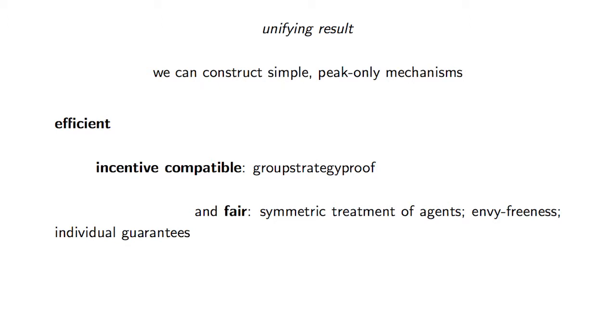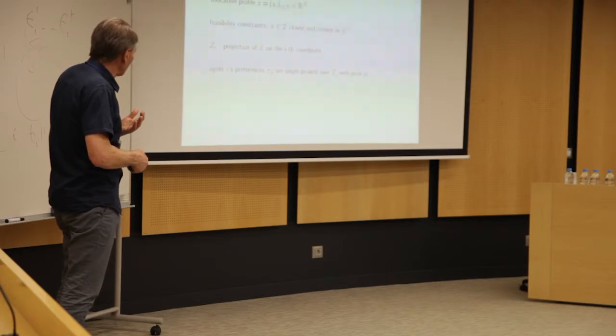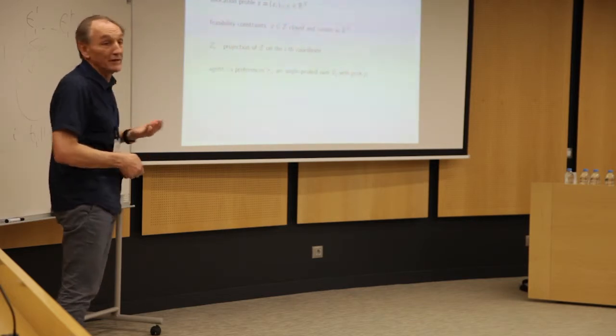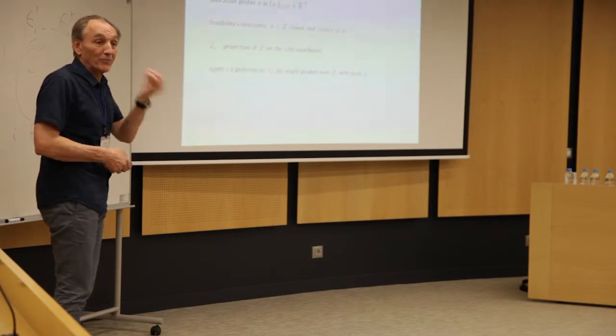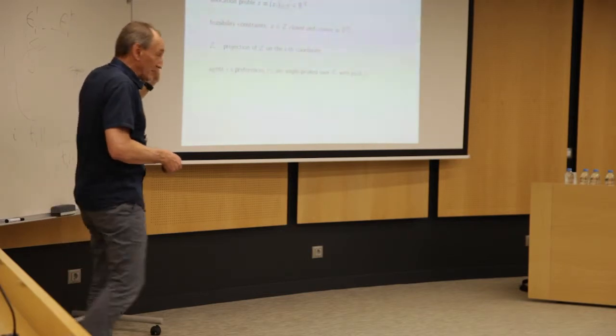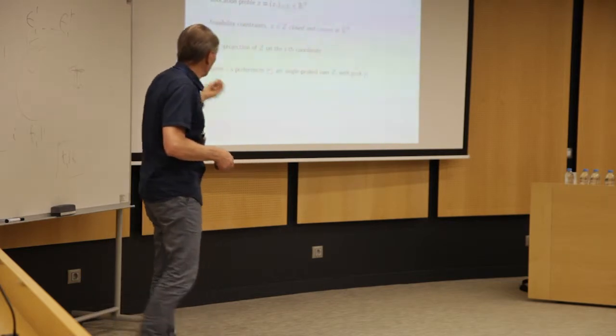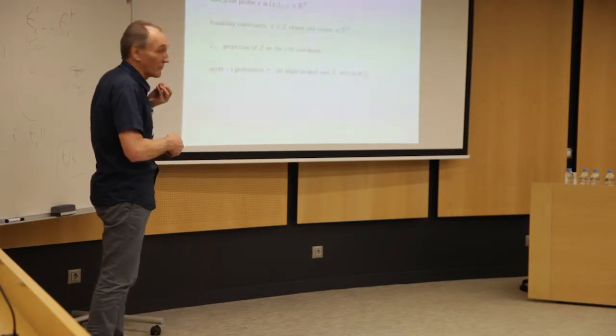The model is very simple. In fact, when I started the paper and I sort of guessed what would be the result, I thought it was going to be a three lines proof. It's actually more complicated, but the model remains quite simple. Apart from a set of agents, basically all we have is a closed and convex set, capital Z in R^n. And that represents, no matter where these things come from,